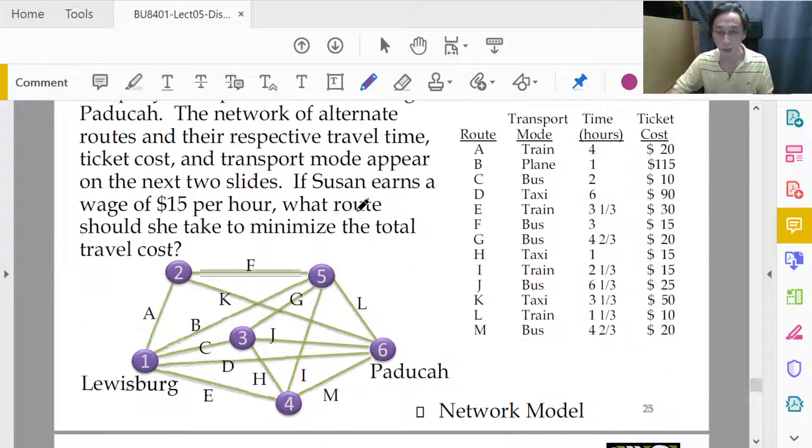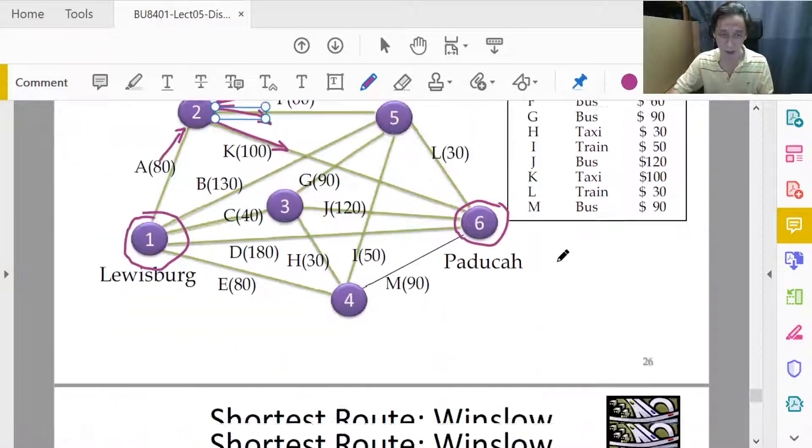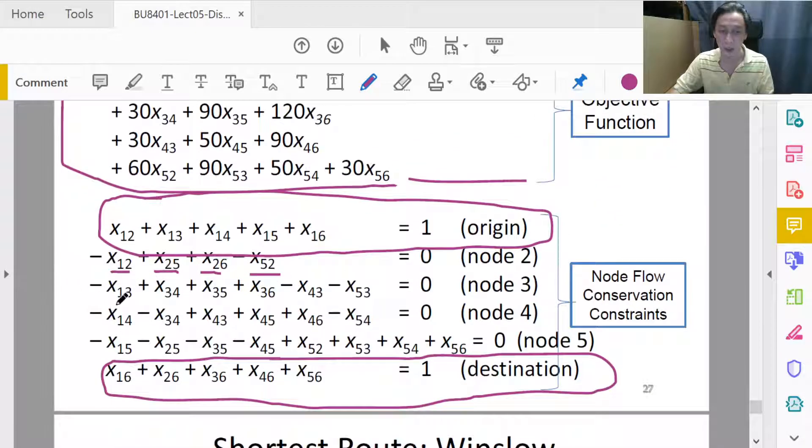For node 3, we already did that earlier on. We have x13 plus x43 plus x53 equals x34 plus x35 plus x36. If we check, 1 to 3, 4 to 3, 5 to 3 equals 3 to 4, 3 to 5, 3 to 6. Exactly. You can move around the terms, bring them across, become negative, but it is still implementing total in equals to total out. I'll leave it to you to check that node 4, this is the correct constraint to be applied to node 4 when we implement the total in equals to total out principle for node 4.